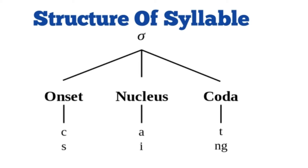Dear friends, look at this simple structure of a syllable. We use this structure for simple words and this structure is taken from Wikipedia. The parts of this structure are: onset, nucleus, and coda.